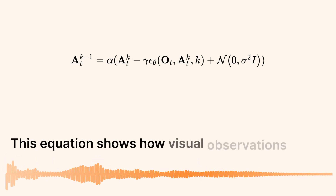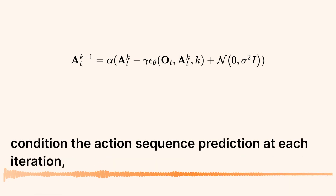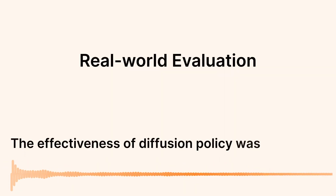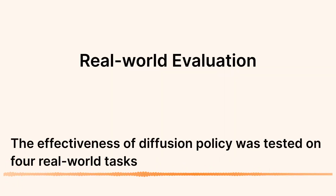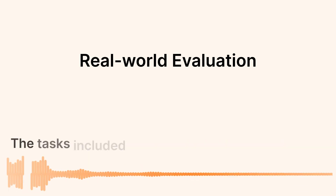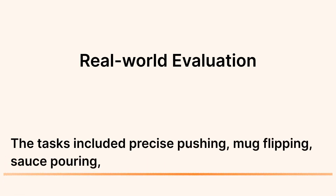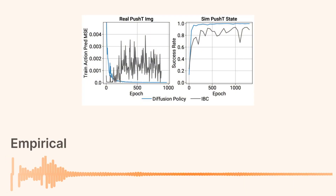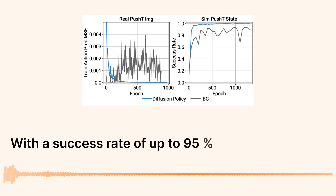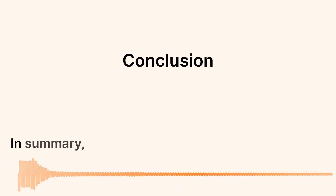This equation shows how visual observations condition the action sequence prediction at each iteration, enhancing real-time control. The effectiveness of diffusion policy was tested on four real-world tasks using two robot platforms, UR5 and Franka. The tasks included precise pushing, mug flipping, sauce pouring, and sauce spreading. Empirical results show close to human performance, with a success rate of up to 95% on the challenging real-world push-T task.